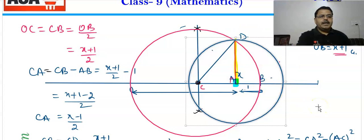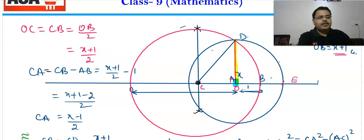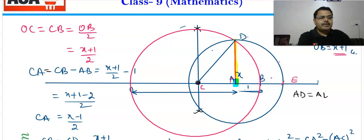If we take A as center and cut the number line, the arc cuts here at point E. So OE equals OA plus AE. AE is equal to √x. So OE equals √x. This distance from 0 is √x.